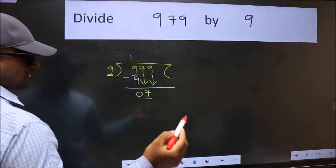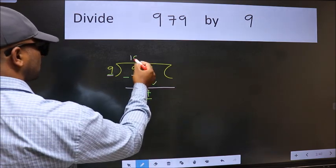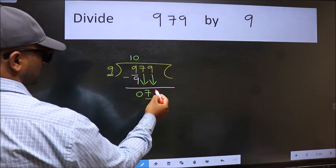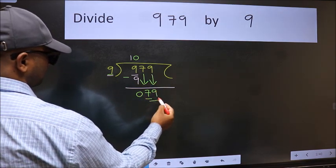The rule to bring down the second number is we should put 0 here. Then only we can bring this number down. Now 79.